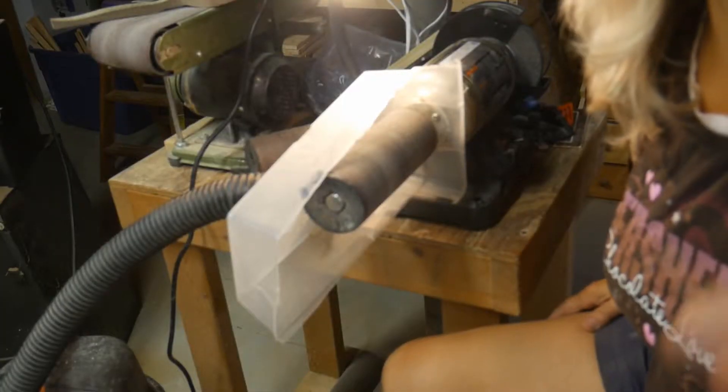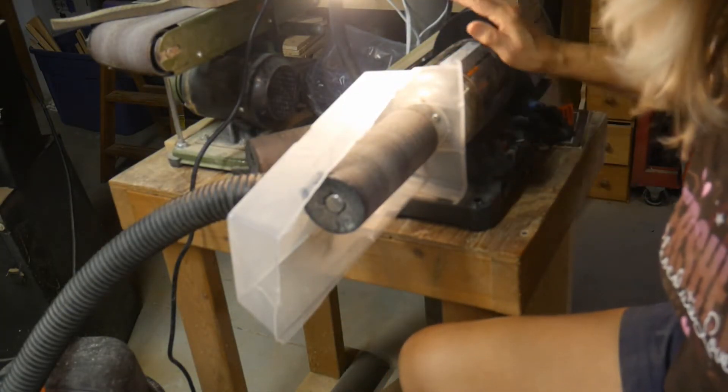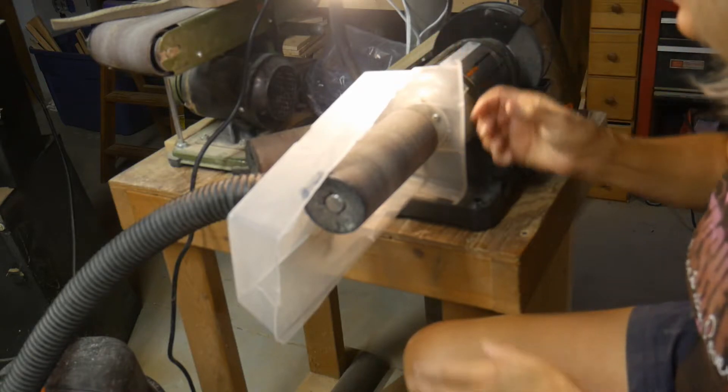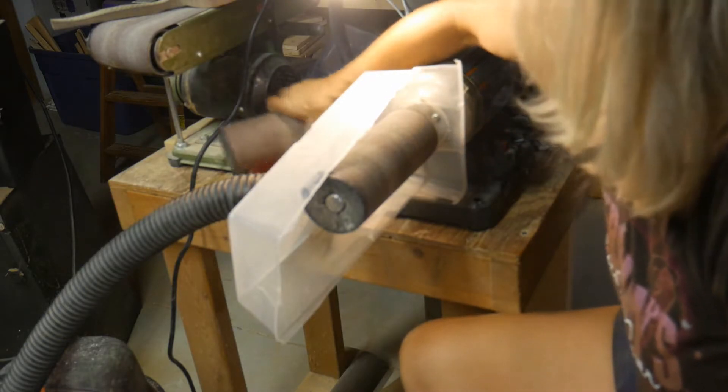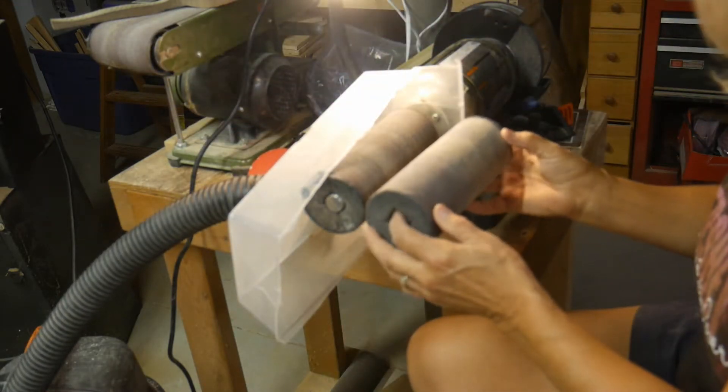I made this round sander in another video and I'm going to be smoothing out the inside. This is a 12 inch grinder that I bought and I fashioned a couple of different sized sleeves that I can put on the ends here.